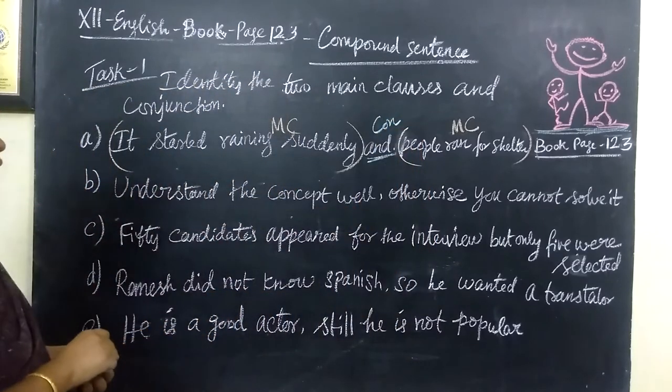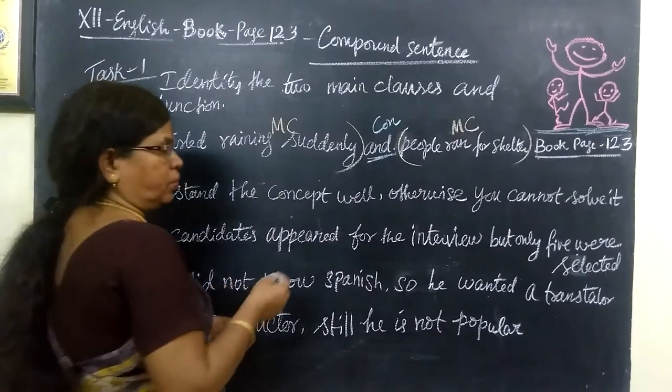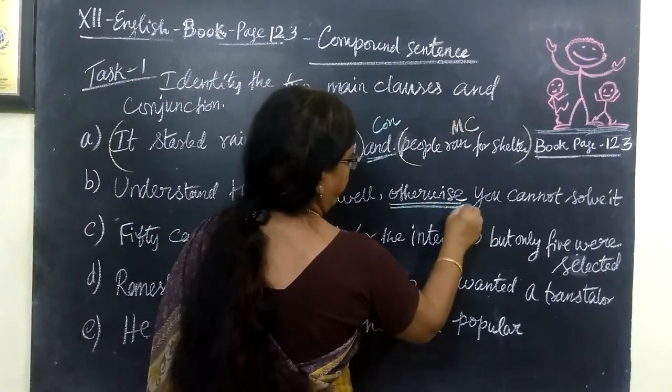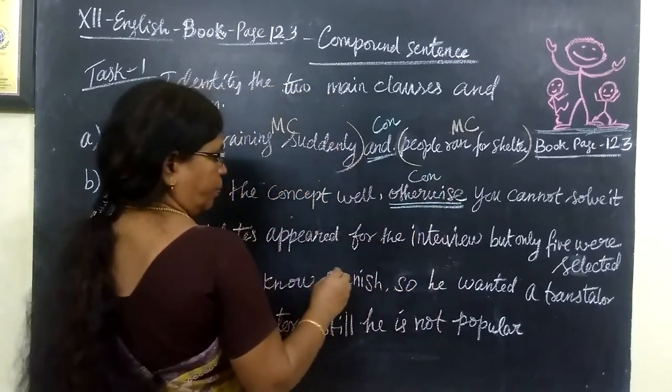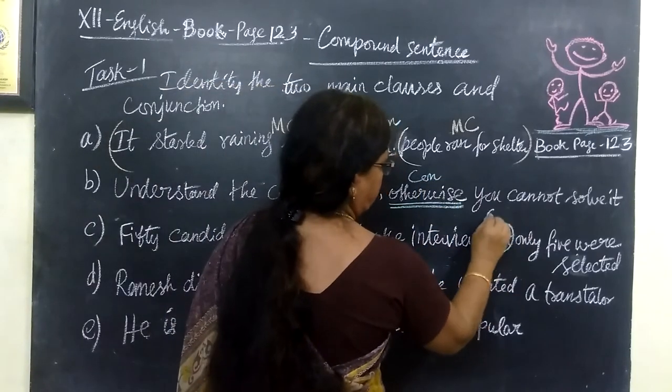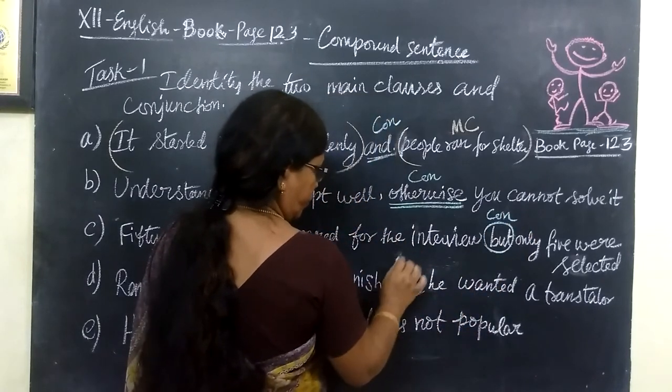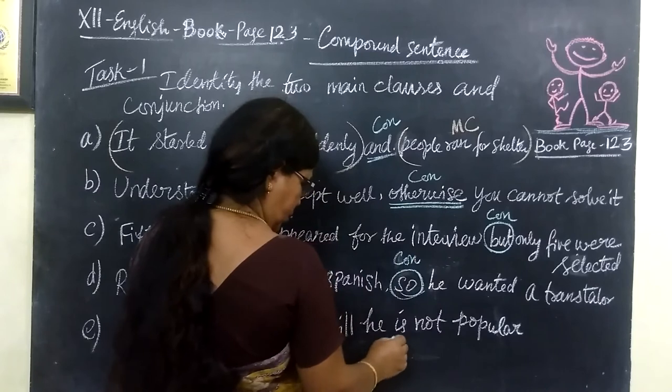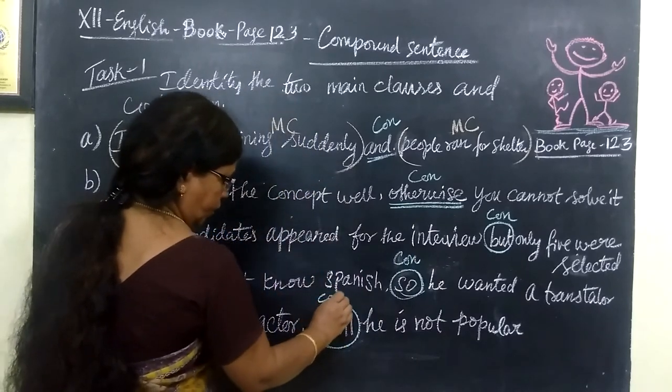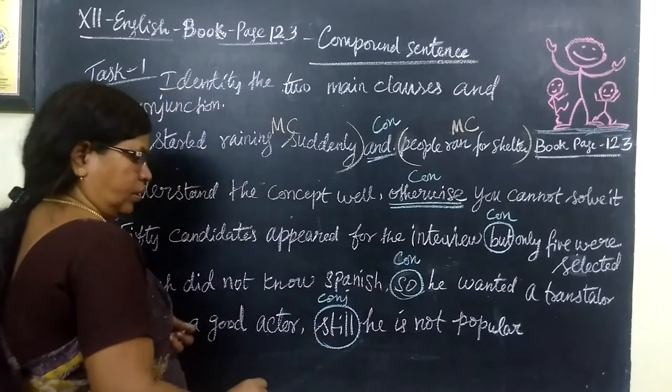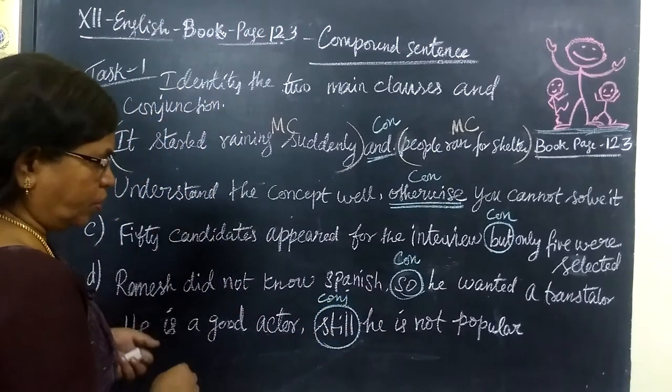Understand the concept well. First we write the conjunction, so that finding the main clause is easy. Here is the conjunction: 'but', then 'so', then 'still'. First we write the conjunction. These are words connecting the main clauses.